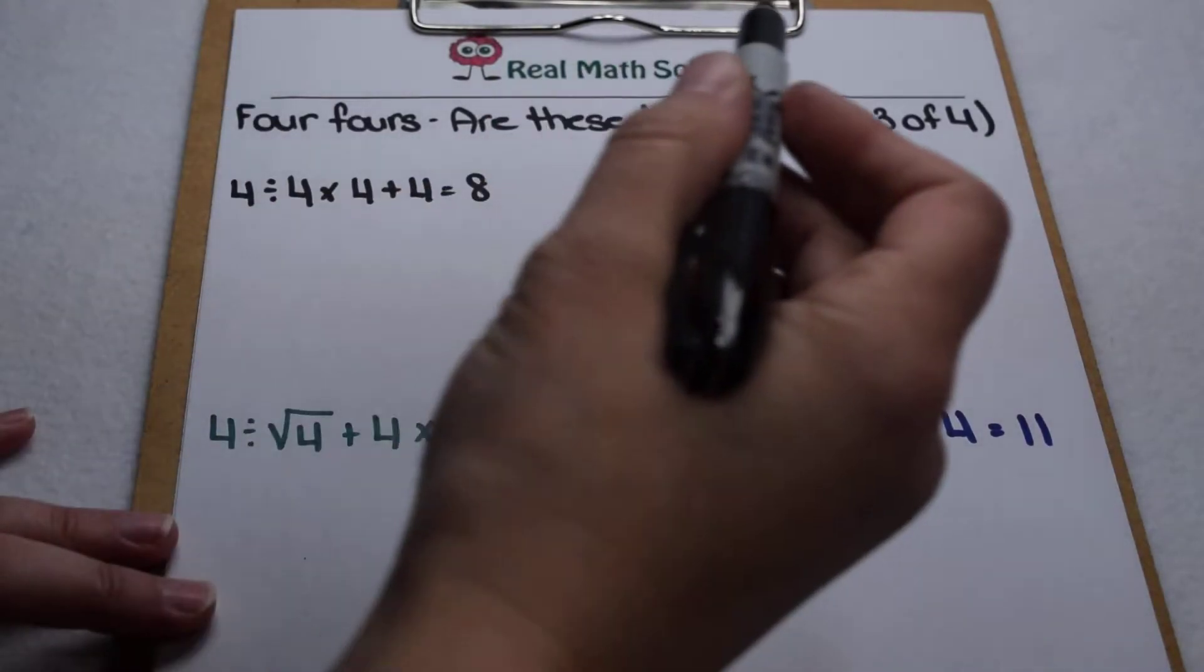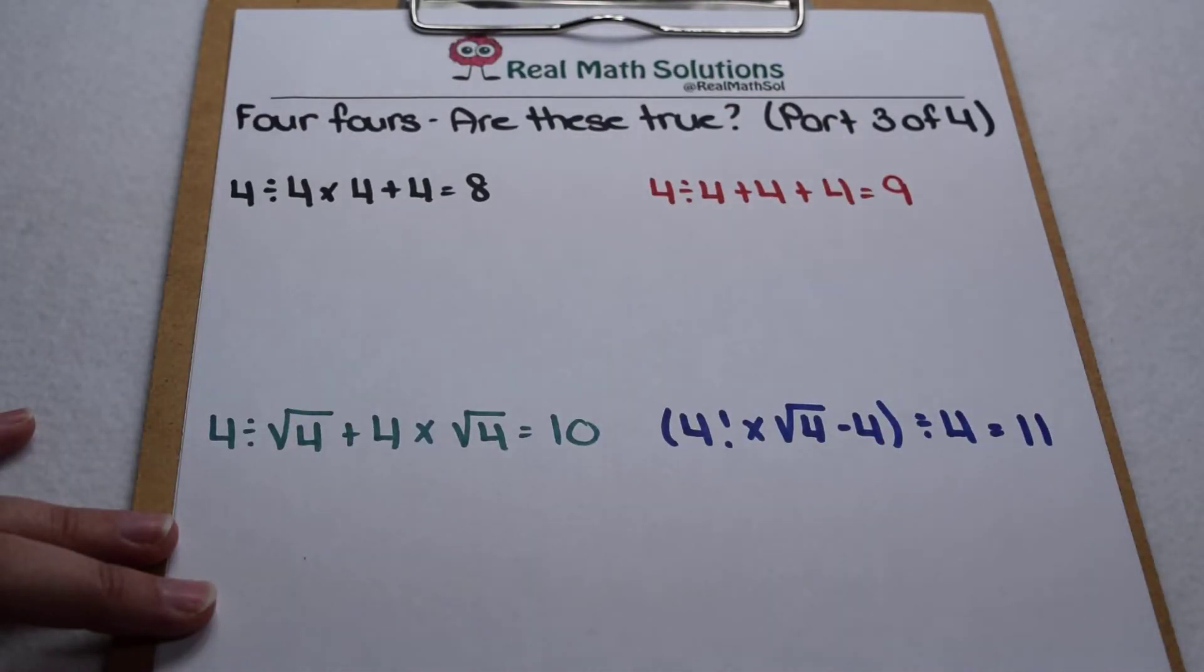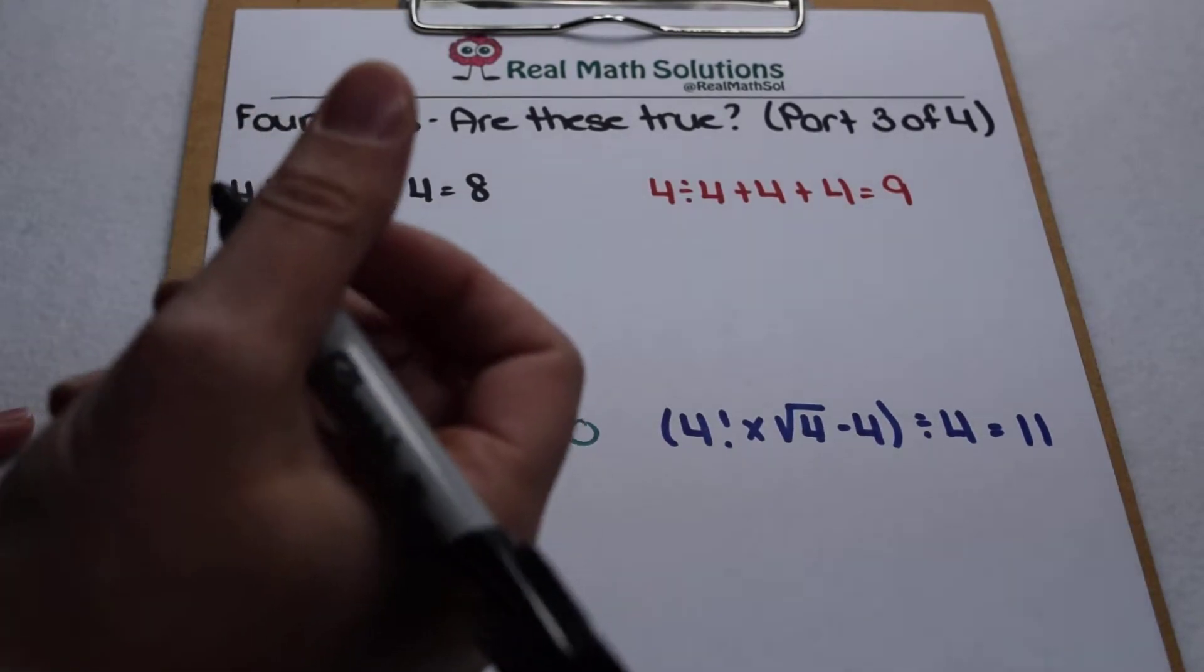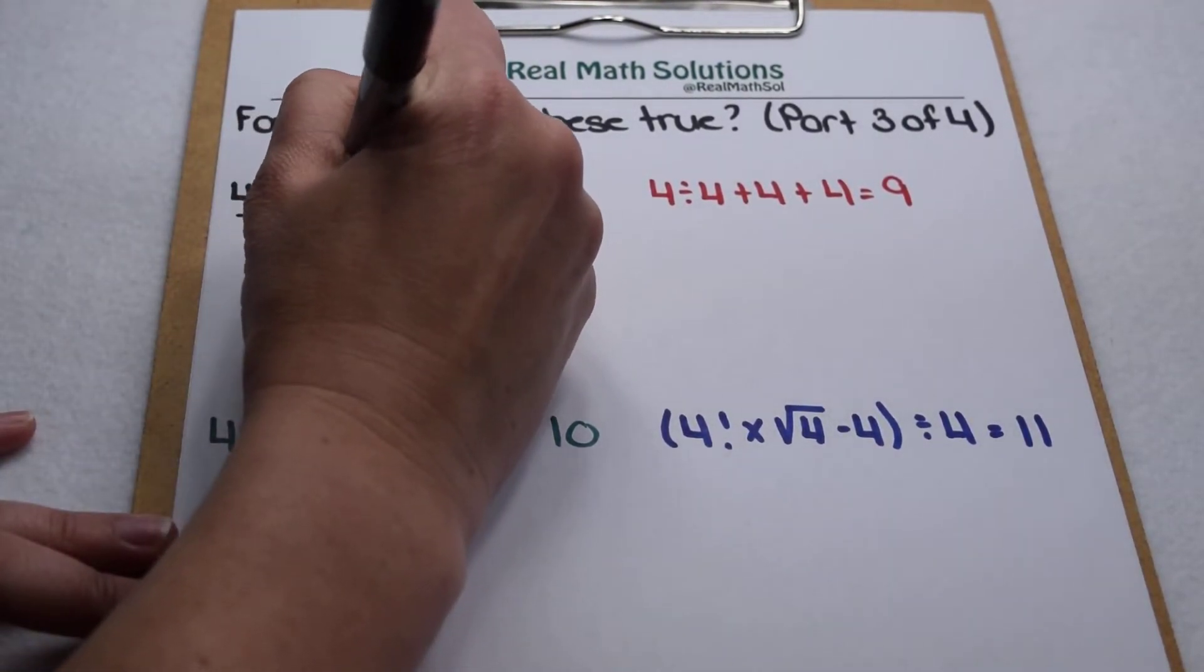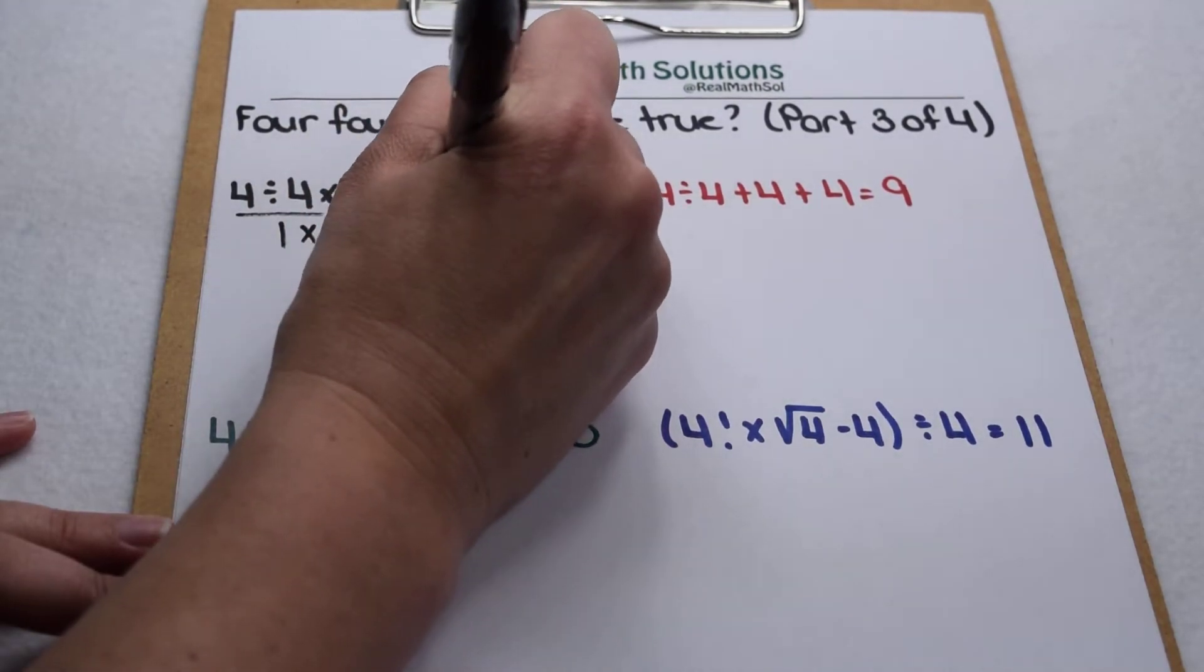Here in part 3, we're going to look at 8, 9, 10, and 11. Starting with 8, I'm going to multiply and divide from left to right. So 4 divided by 4 is 1, so that leaves me with 1 times 4 plus 4 to equal 8.